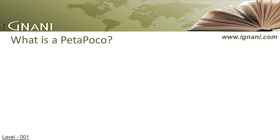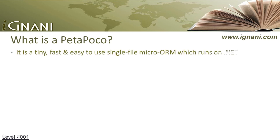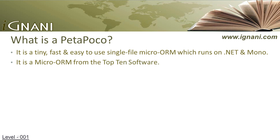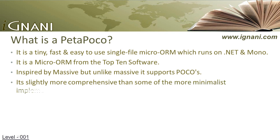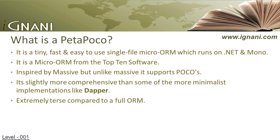What is PetaPoco? PetaPoco is a tiny, fast, and easy to use single file micro ORM, which runs on .NET and Mono. It's a single file micro ORM that can be easily added into the project, which supports strongly typed POCOs. It supports a close relationship between a database table and the objects. It is a micro ORM from Topten Software, which was inspired by Massive. But unlike Massive, it supports POCOs. It's slightly more comprehensive than some of the more minimalist implementations like Dapper, but is still extremely terse compared to a full ORM.